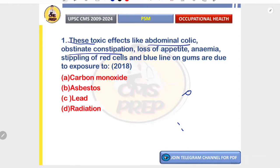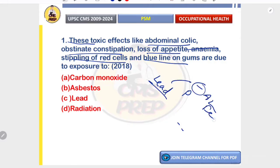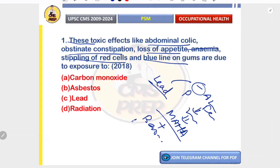Question number one: toxic effects like abdominal colic, obstinate constipation, loss of appetite, anemia, stippling of RBC, and blue line on gums are due to exposure to lead. Lead inhibits ALA dehydratase and ferrochelatase, blocking heme synthesis. This causes microcytic hypochromic anemia and basophilic stippling — undegraded RNA remains in the RBC, visible on peripheral smear.